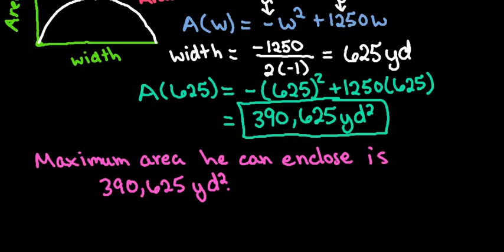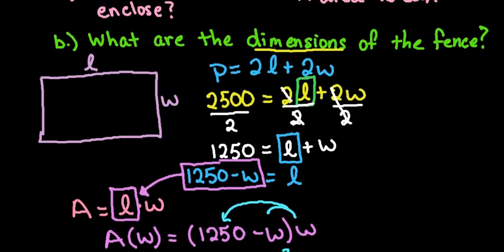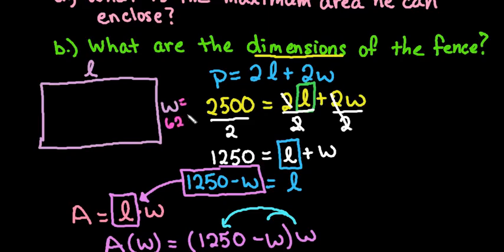The other thing that it asked us for was the dimensions. Well, we already know that our width right here is 625. So we have to find our length to get the dimensions. So we need to know what is our length. And remember that we have this equation here that length is equal to 1250 minus W, or we have that the area is equal to the length times the width. So you have two options.